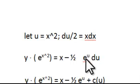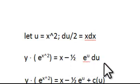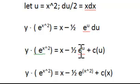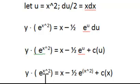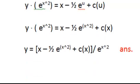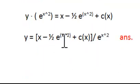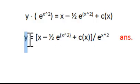Then substituting, we would have one half times e to the u du, which gives one half e to the u plus C. Then changing u back to x squared, we would have one half e raised to x squared plus C. Dividing both sides by e raised to x squared, we would have y equal to one half plus C over e raised to x squared.